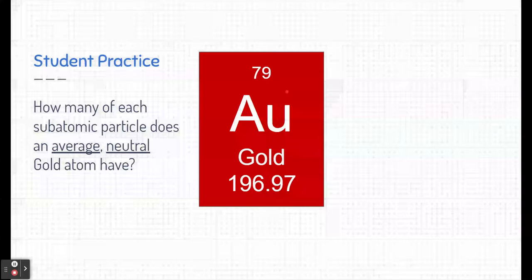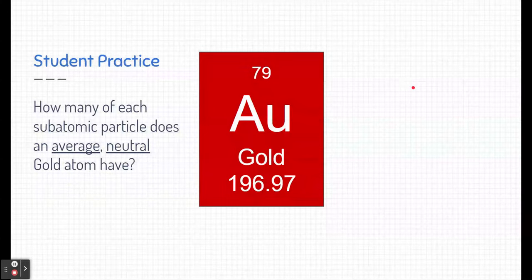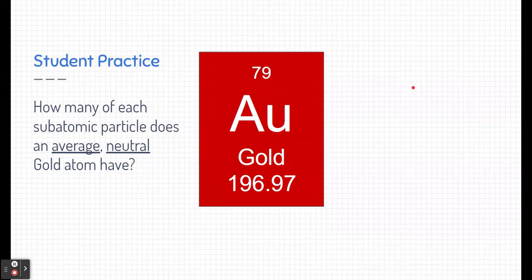Try out the student practice yourself. How many of each subatomic particle does an average neutral gold atom have? Here is gold as it's written on the periodic table. Pause the video right now and see if you can solve this. How many protons, neutrons, and electrons does an average neutral gold atom have?